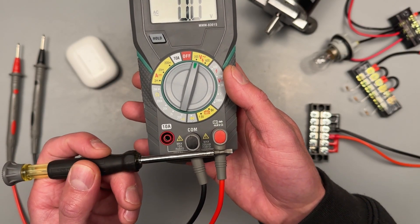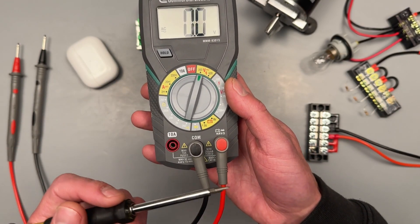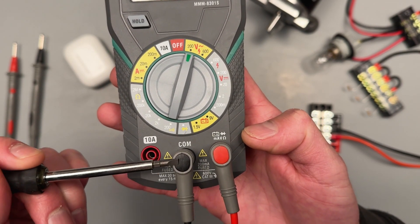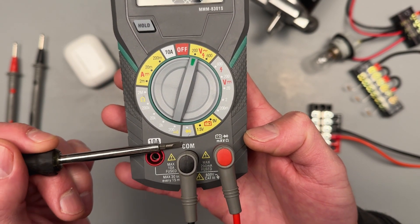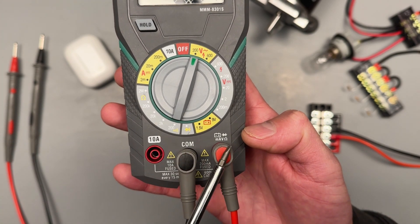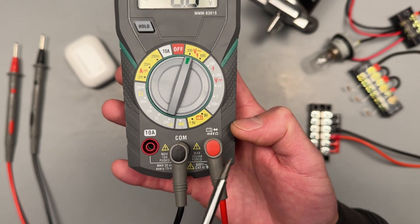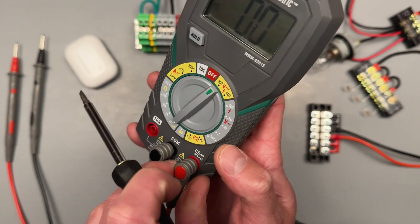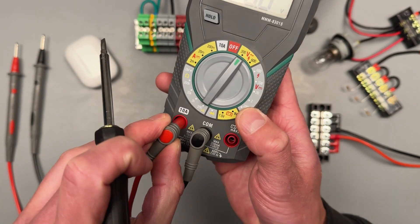Another important thing is going to be your test leads and the ports. Make sure you're paying attention to the labeling of your ports. Your black lead will always go into the common port, and then you could have two ports total, three, or four depending on your meter. Your red lead will be the one to hop around depending on what you're trying to measure.